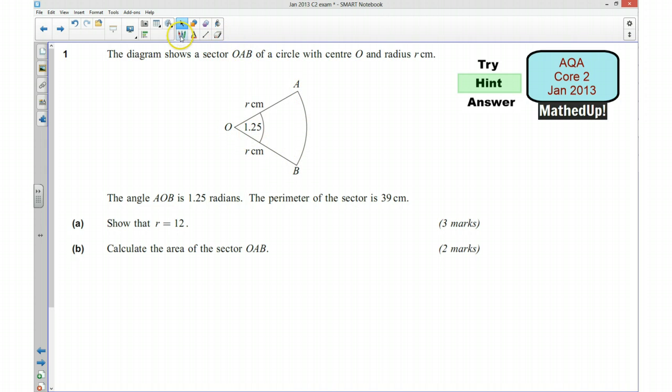Now what we need to do is use our formula where the length of the arc is equal to r theta. Okay, that's the letter L. The length of the arc is equal to r theta, so this length here is equal to r theta.